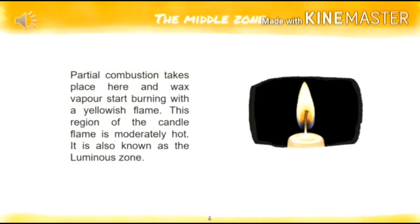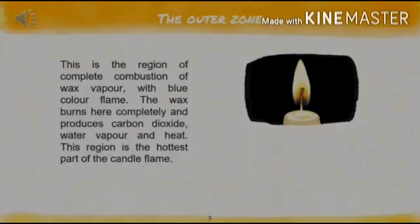In the middle zone, partial combustion takes place and wax vapor starts burning with a yellowish flame. This region of the candle flame is moderately hot. It is also known as the luminous zone — meaning it is bright and shining.